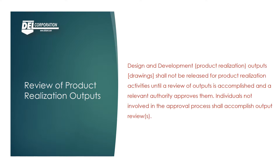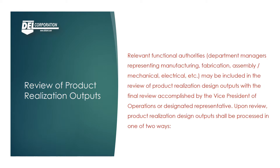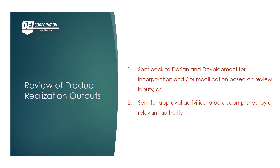Design and development or product realization outputs shall not be released for product realization activities until a review of outputs is accomplished and a relevant authority approves them. Individuals not involved in the approval process shall accomplish output reviews. Relevant functional authorities such as department managers representing manufacturing, fabrication, assembly, mechanical, or electrical may be included, with the final review accomplished by the vice president of operations or designated representative. Upon review, product realization design outputs shall be processed in one of two ways: sent back to design and development for modification, or sent for approval activities to be accomplished by a relevant authority.